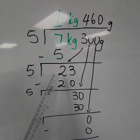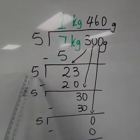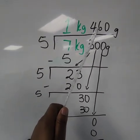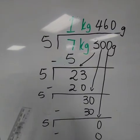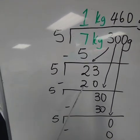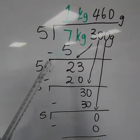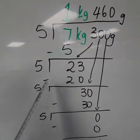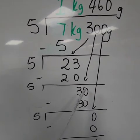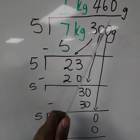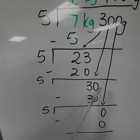Then 5 into 23 or 23 divided by 5 will then start our grams. Now we'll give us a 4. Then 5 multiplied by 4. That will give us a 20. Then we subtract 23 minus 20. Then that will give us a 3. Then we bring down the next digit.